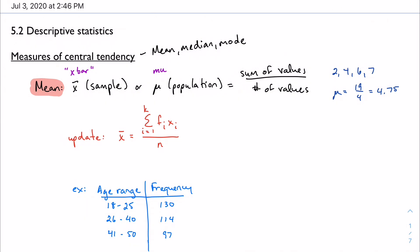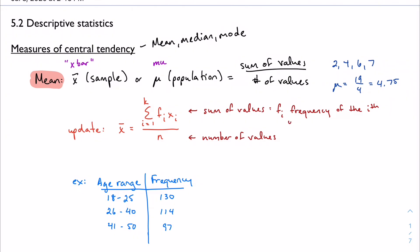So we're used to that version of the definition. We're going to update this a little bit more. And the book gives us this monstrosity over here. So it's saying the same thing, though. This sum of all my f_i x_i's is just my sum of all the values, and n is the number of values.